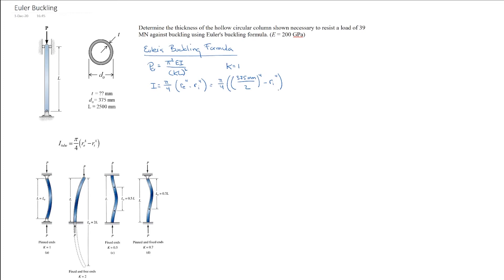So basically I'm just going to plug all of these into Euler's buckling formula and then rearrange it and solve for my internal radius.